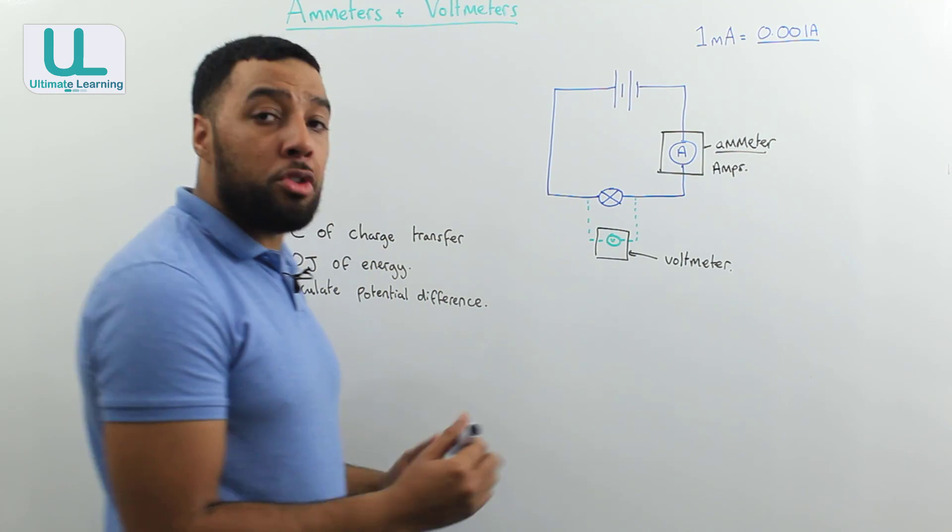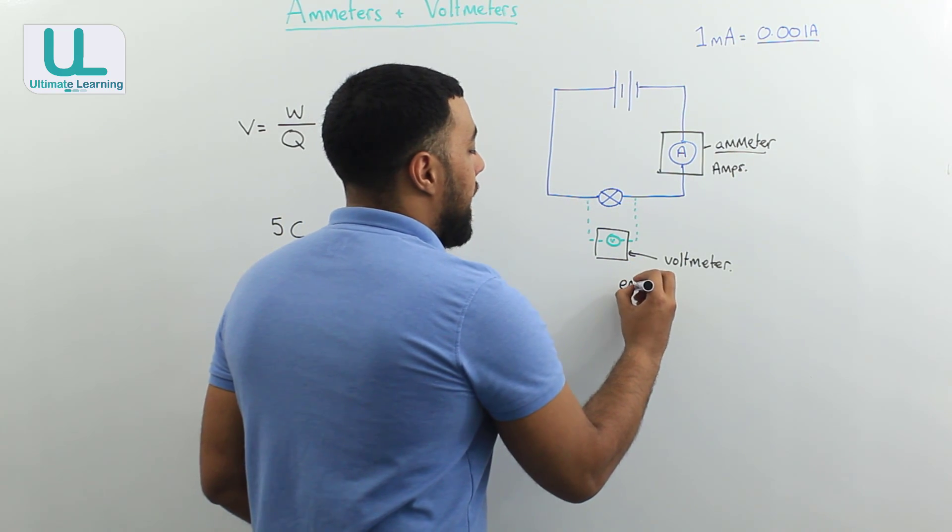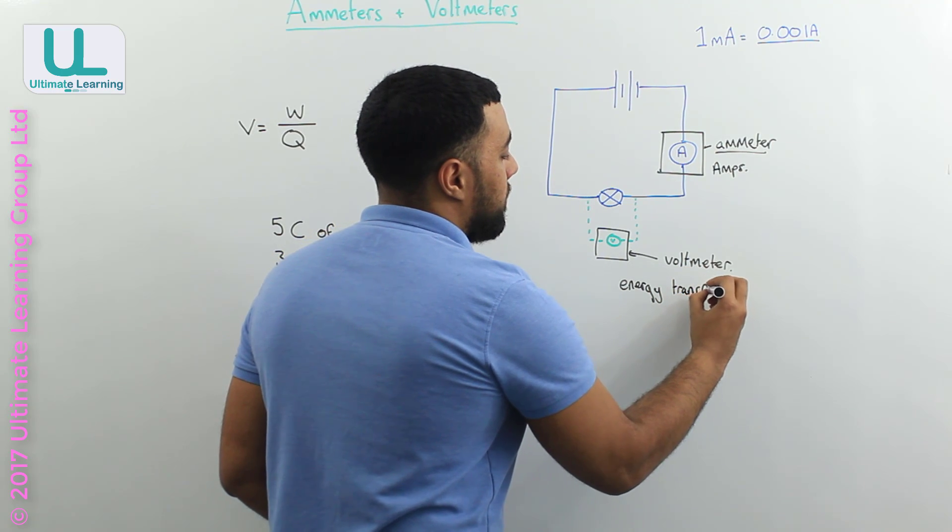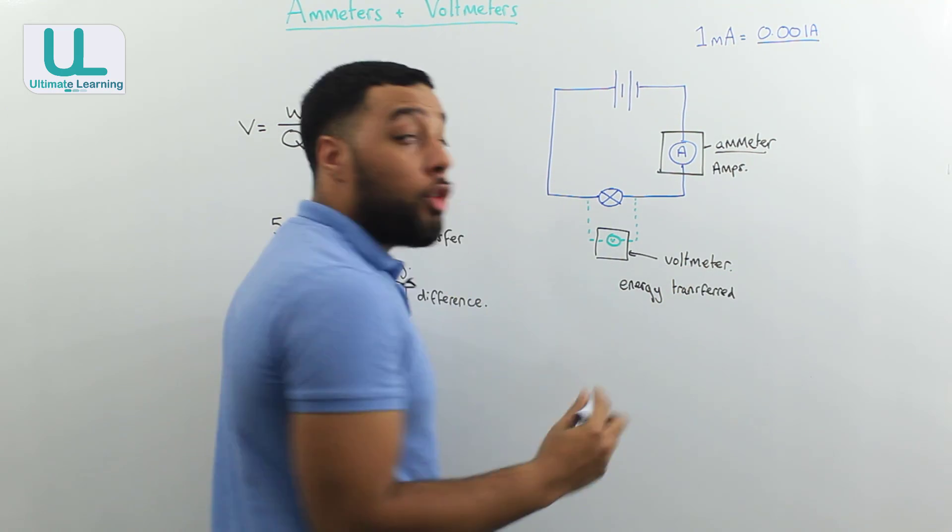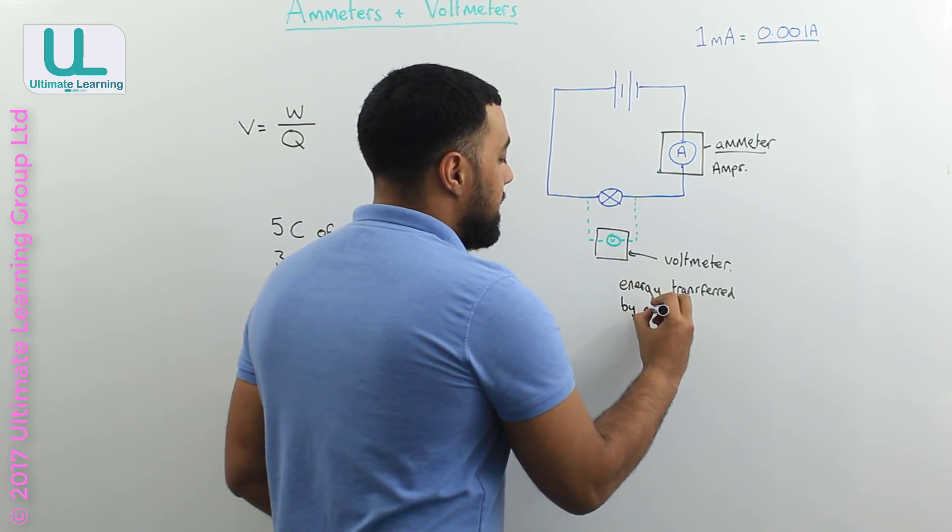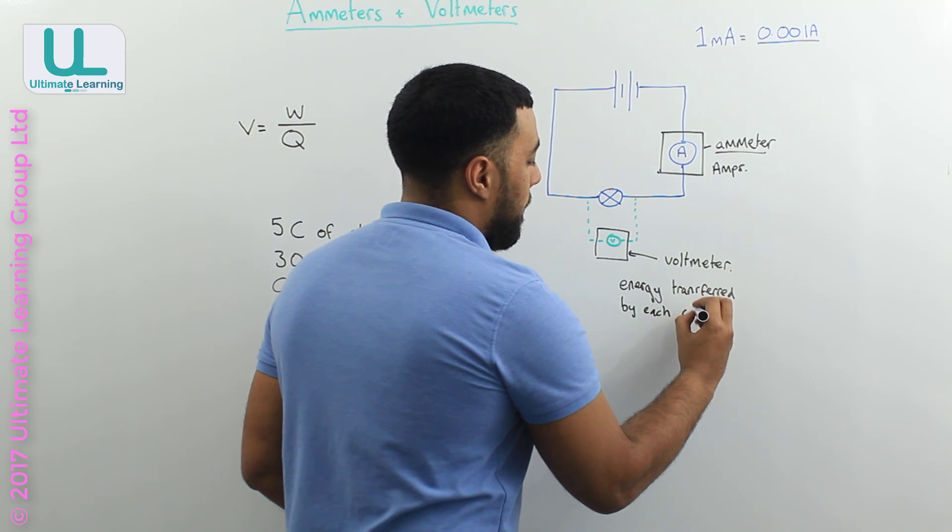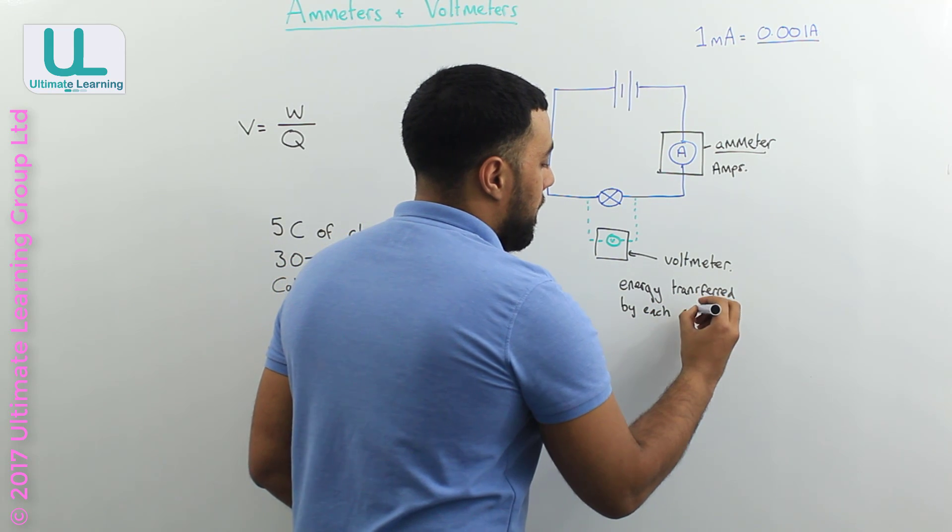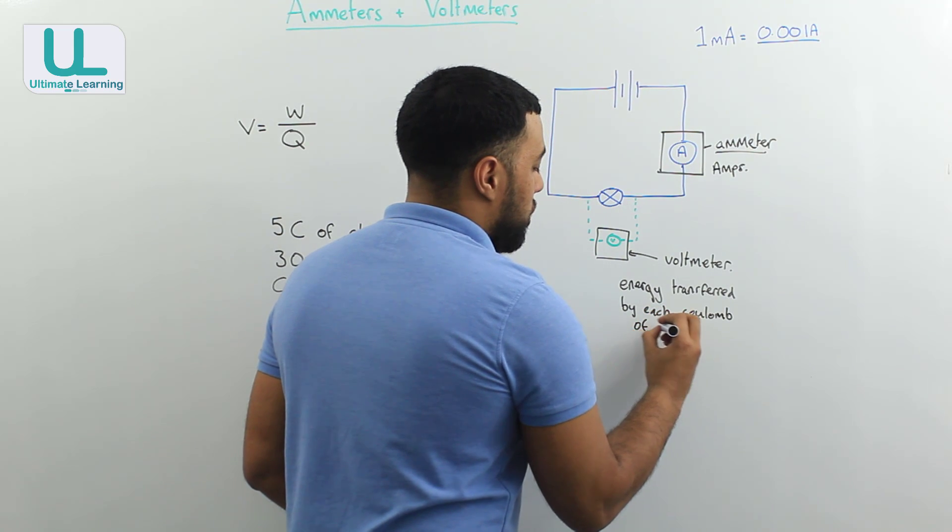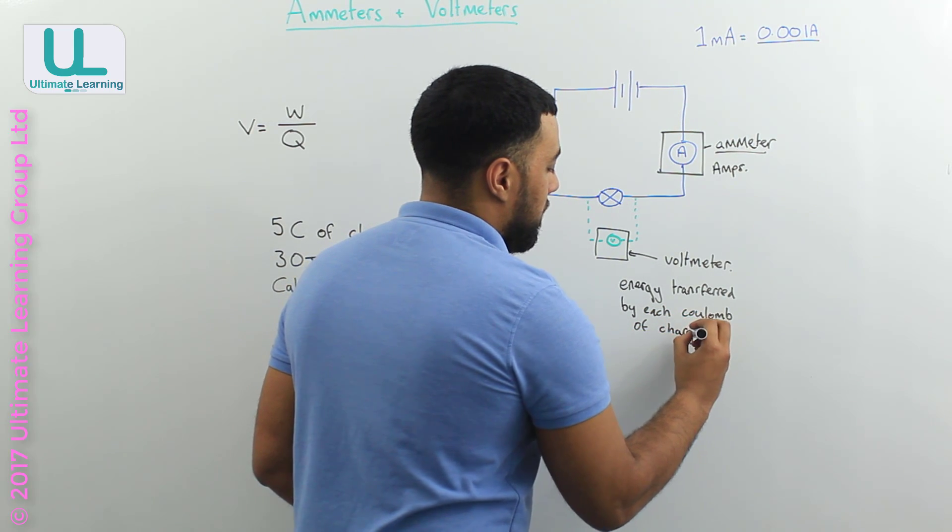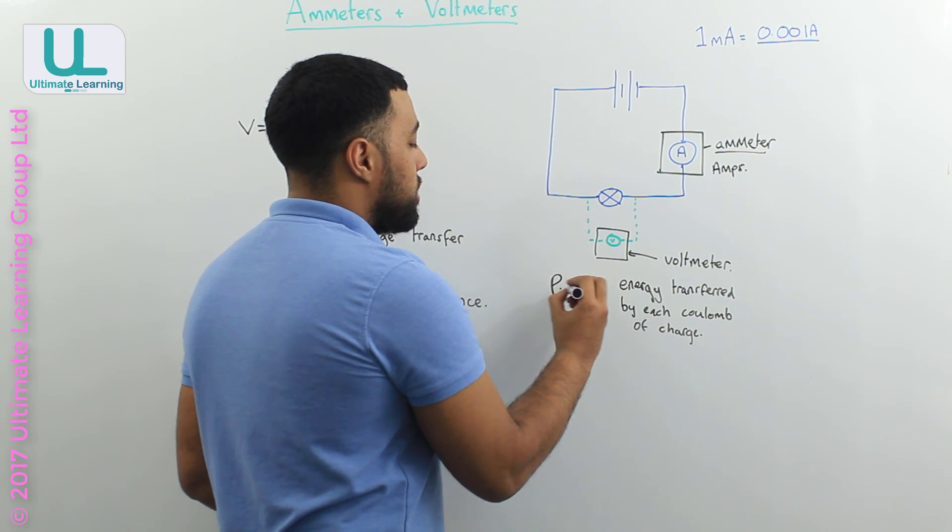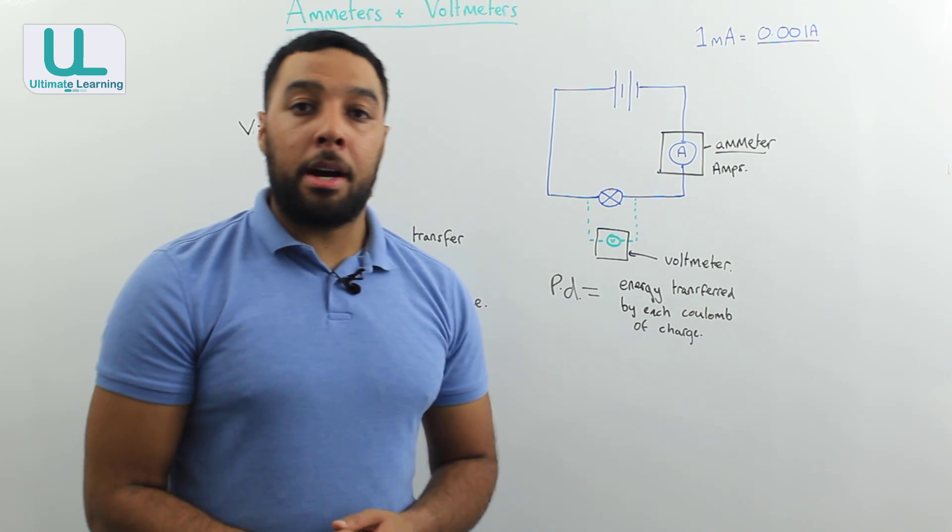Potential difference is just another way of saying energy transferred, or in physics we can also say work done, by each coulomb of charge. And this really is what potential difference is all about.